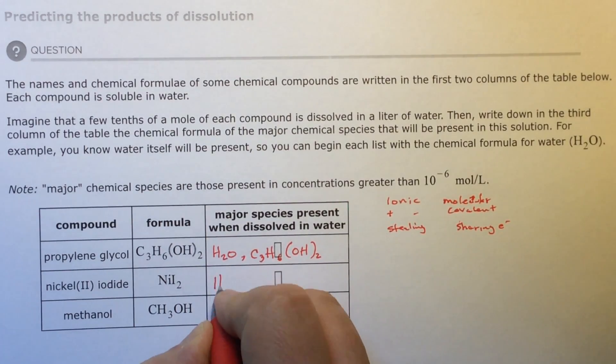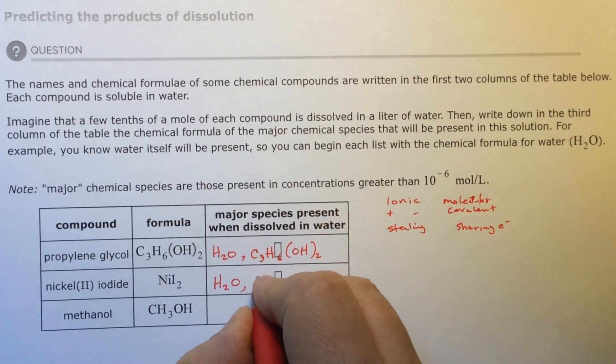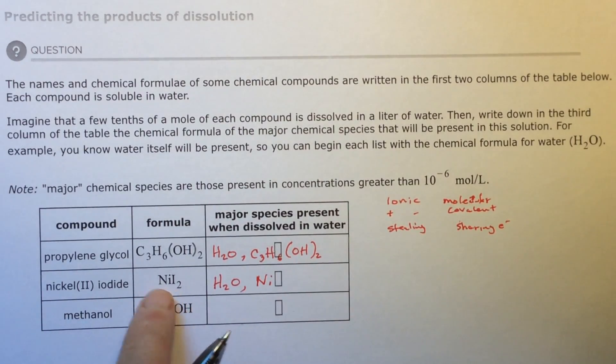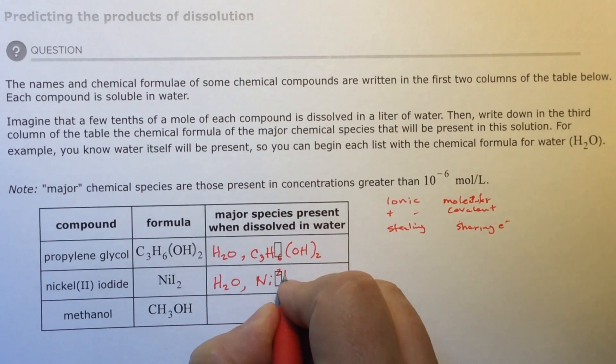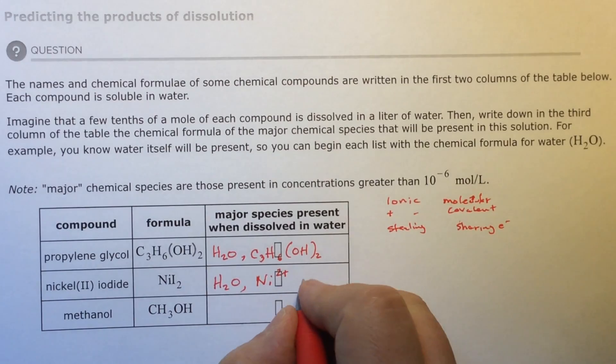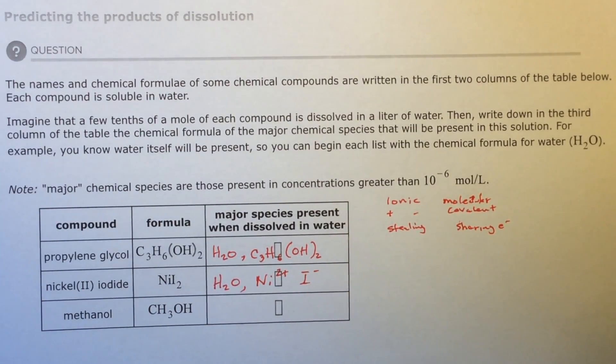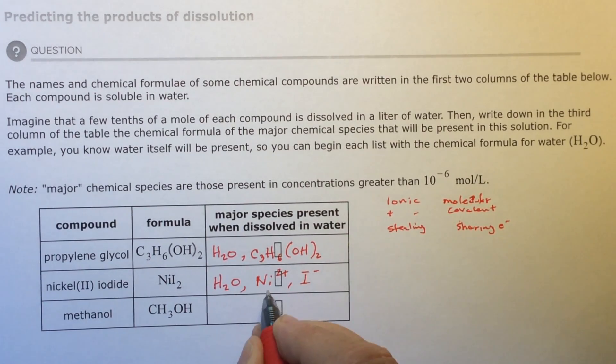You're going to have three things in the water—not three things in the water, you can have the water. Then you're going to have the nickel, and it is two positive. Since it's nickel two, they gave it to you. The iodine is not I₂ because there's two of these—it's just going to be I. It's in group seven, so that's negative one. It's going to be water plus nickel two positive plus iodine one negative.